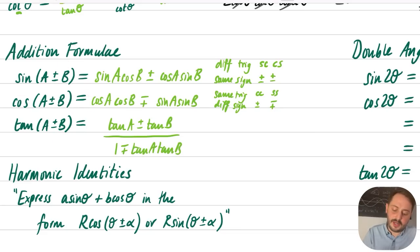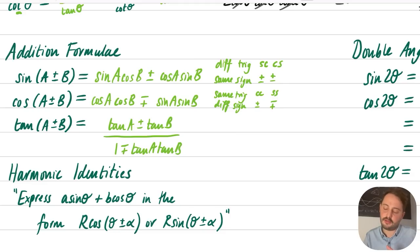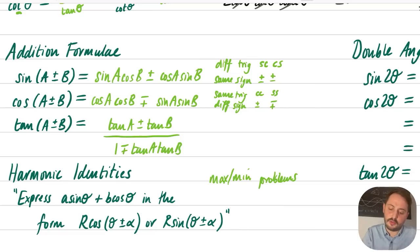The addition formulae lead to harmonic identities, where you express something like a sin θ + b cos θ in the form R sin(θ + α) or R cos(θ + α). These are great for finding maximum and minimum values and for solving equations of the form a sin θ + b cos θ = constant.